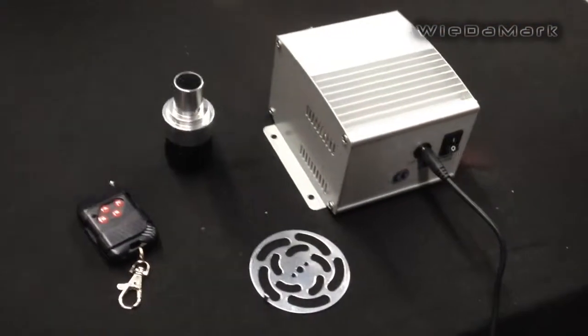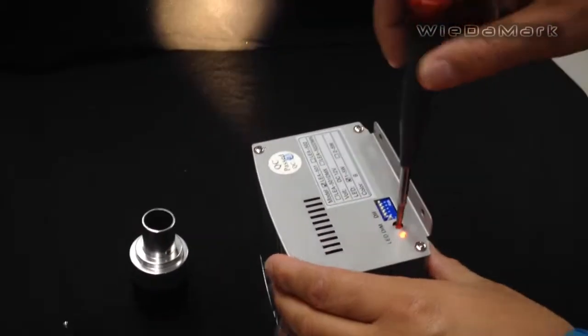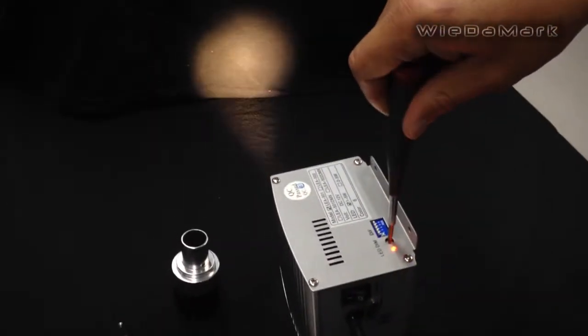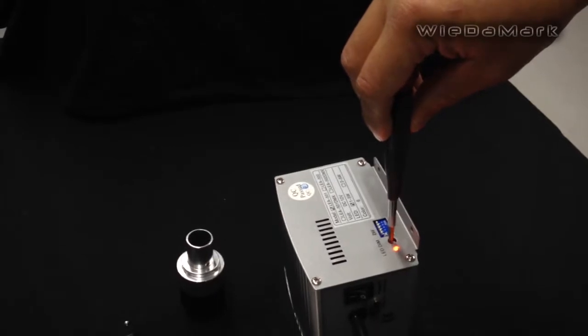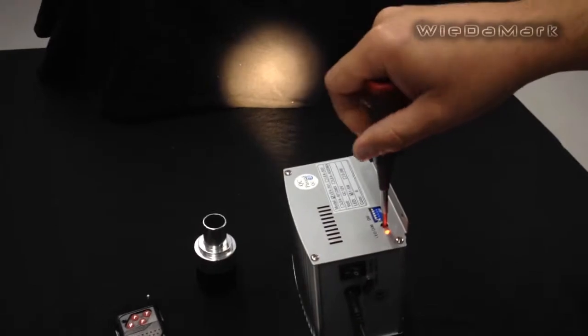We'll turn it on and the first thing I want to show you is the dimmable function on the dimmable screw on the side of the unit. You can dim it down all the way that it's off and dim it all the way to where it's on full brightness.